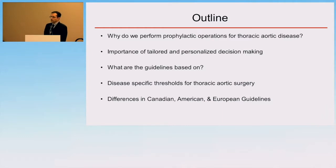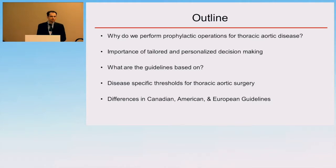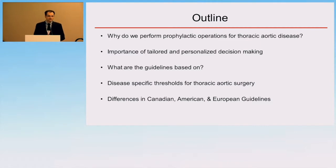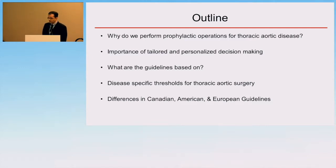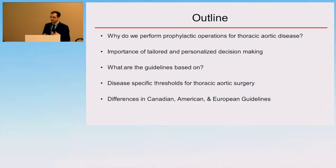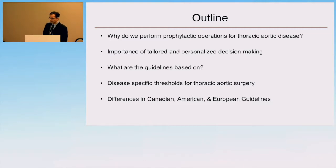Prior to 2010, there was no guideline statement in thoracic aortic disease. Aortic disease was frequently lumped in with valvular heart disease in terms of providing clinical tools. There has been significant improvement in recognizing aortic disease as its own entity, and as such, multiple iterations of guidelines have emerged, each with their strengths and weaknesses.